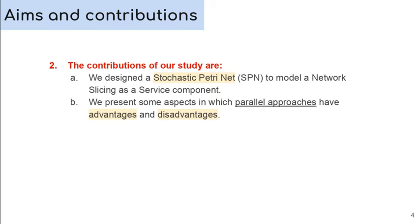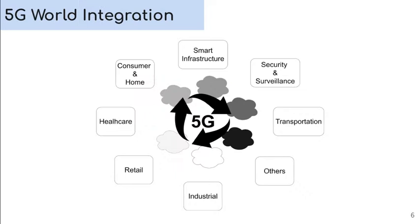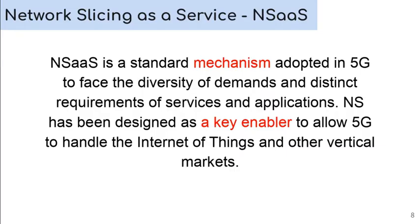Fifth-generation mobile networks, 5G, have the ambition to endure a wide range of services and applications. Here, in this figure, we can see some areas in which 5G is vital to the success of their goals. It's important to note that each application from each area has its demand. NSaaS is a standard mechanism adopted in 5G to face the diversity of demand and distinct requirements of services and applications.